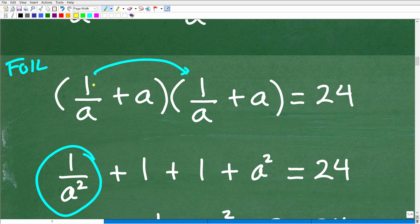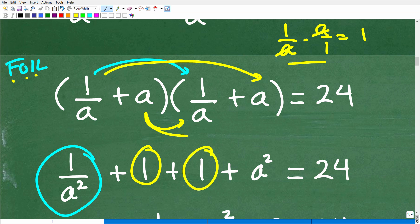So the outer should be what? 1/a times a. Okay, now 1/a times a is what? Well, I'll just show you here. 1/a times a, or a/1, the a is cross-canceled, is just 1. So hopefully you saw that, and that is 1. So let's do the inners now: first, outer, inner. So a times 1/a is the same thing. That will be 1. And then a times a is a².